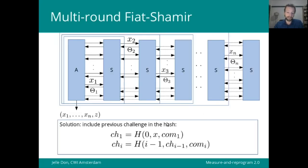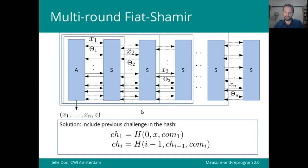The way to do that is simply to include the previous challenge in the hash for the next challenge, which would mean in this example, that before the adversary could even query x2, it needs to know the value of theta 1 since it will be a part of x2. So that enforces the adversary to query all the hash inputs in the correct order. This is not our contribution. This is folklore knowledge also for classical multi-round Fiat-Shamir, but I just wanted to mention it to complete the analysis.